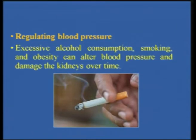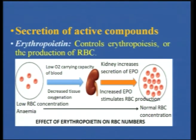The kidneys are also very important in regulating blood pressure. Patients who have taken blood pressure medicines for a long time — over 20 or 30 years — may have their kidneys slightly damaged because therapeutic drugs can also have an effect on the kidneys. Excessive alcohol consumption, smoking, and obesity can also alter blood pressure and damage the kidneys over time. The kidneys also secrete active compounds like erythropoietin, which controls erythropoiesis — the production of red blood cells in the body.